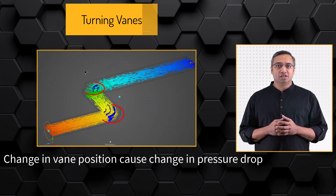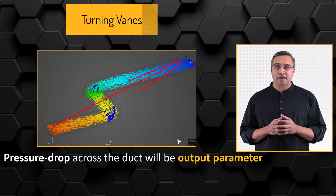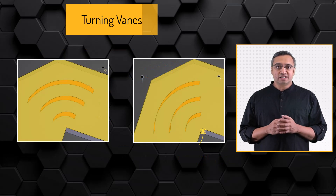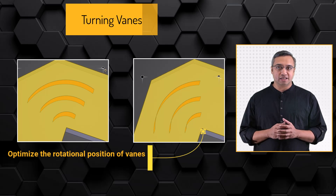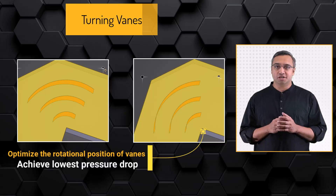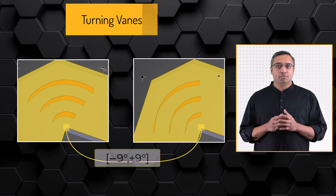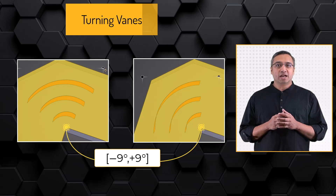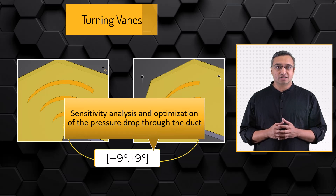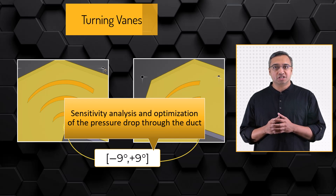As the positions of the turning vanes vary, so does the pressure drop across the duct, making the latter a suitable output parameter. The goal of this analysis is to optimize the rotational position of each set of vanes to achieve the lowest possible pressure drop. Each set of vanes can be independently rotated by plus or minus 9 degrees. In this course, we will be conducting sensitivity analysis and optimization of the pressure drop through the duct with respect to the position of the turning vanes.